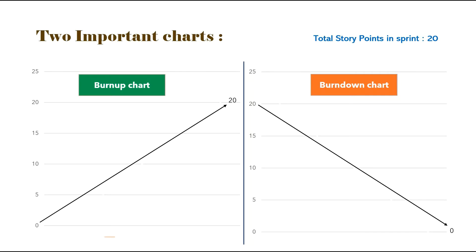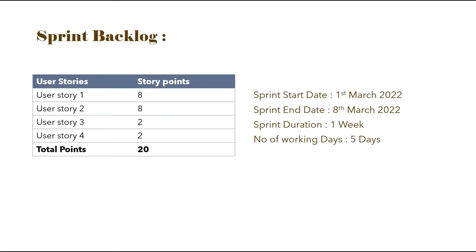This sprint can be measured using two important charts: the Burn Up Chart and the Burn Down Chart. In the Burn Up Chart, the count starts from 0 and goes up to the target number — in our case, 20 story points. But in the Burn Down Chart, the count starts from 20 and reduces down to 0. In this video, we will only learn about the Burn Down Chart and how it is generated for all possible scenarios based on team performance.